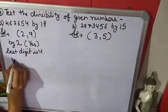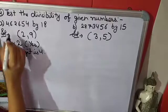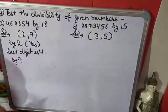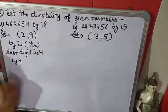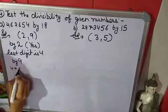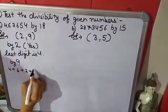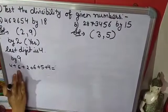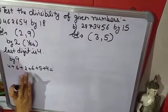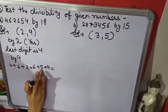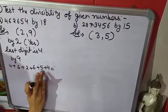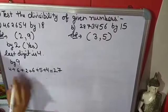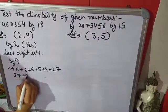Now we check divisibility by 9. The rule: sum all the digits: 4 plus 6 plus 2 plus 6 plus 5 plus 4. That gives 10, 12, 18, 23, and 27. Now 27 is completely divisible by 9.